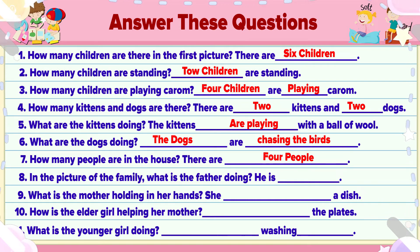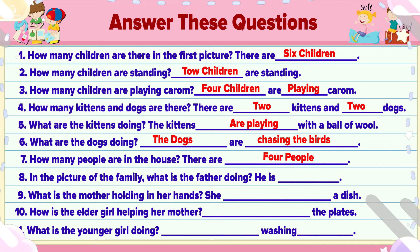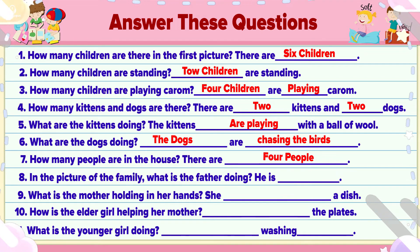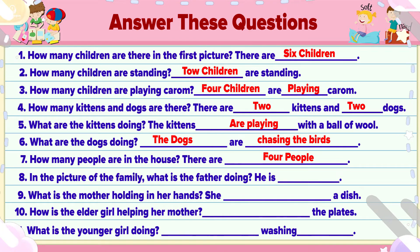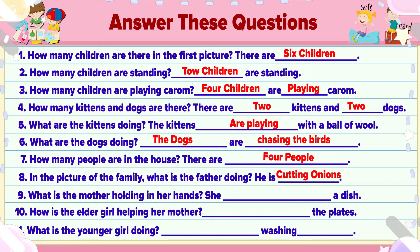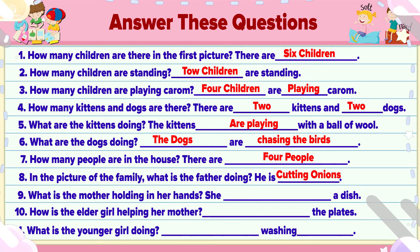Point 8. In the picture of the family, what is the father doing? He is cutting onions for salad.